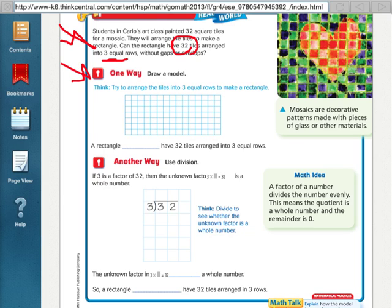One way to do that is just draw a model. So, start with 3 rows and we are going to count by 3's until we get to 32. So, 3, 6, 9, 12, 15, 18, 21, 24, 27, 30. And then we'd only have 32. So, we couldn't do all 3 of those. We'd have to only do 2 of those ones in that last row. So, no.